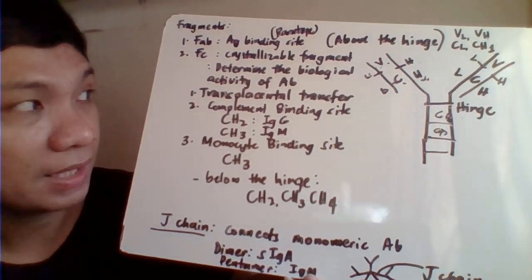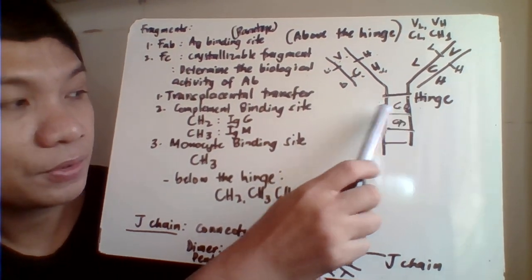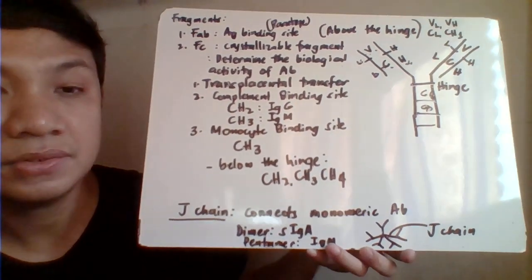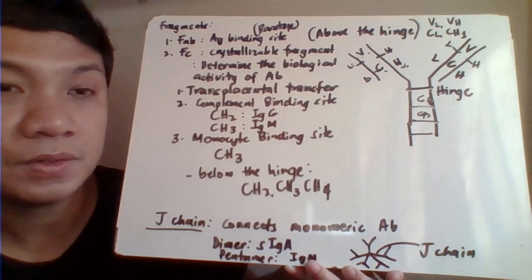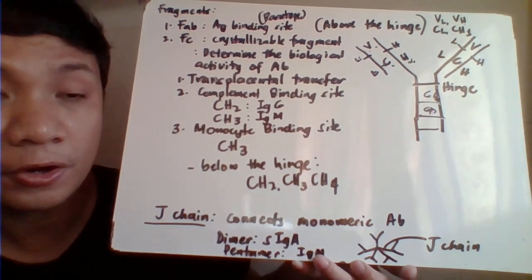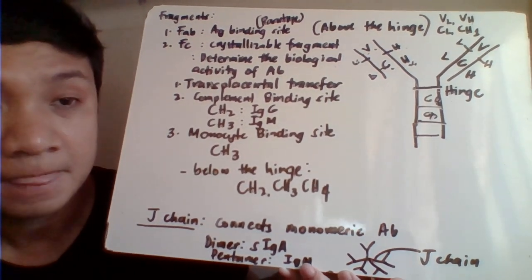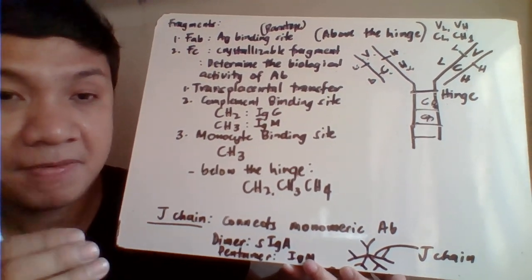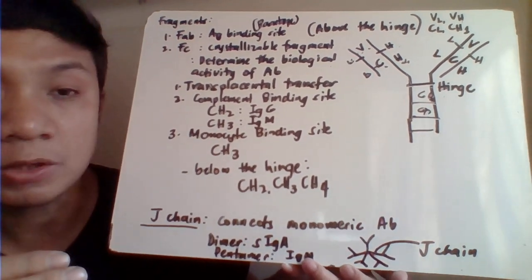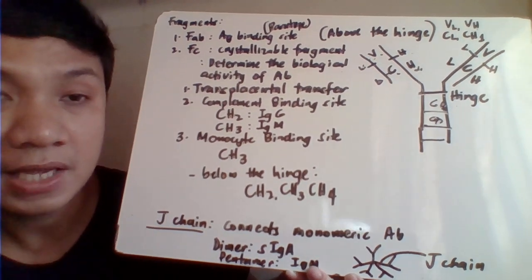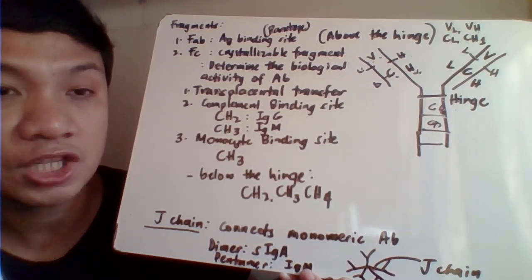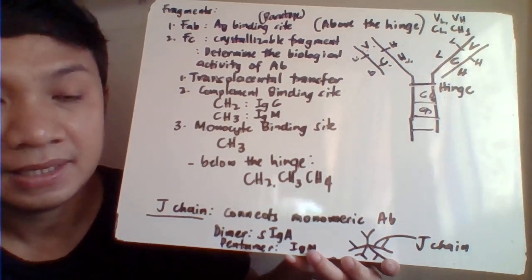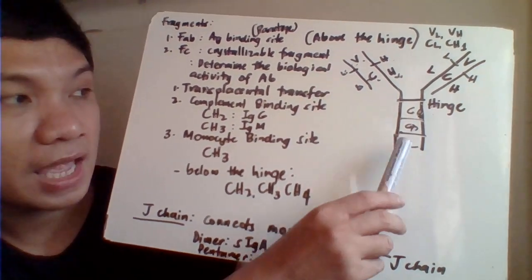The complement binds to the Fc portion of the antibody — at CH3 in the case of IgM, and at CH2 in the case of IgG. Only IgM and IgG are capable of complement fixation. Monocytes can also bind to the antibody through its CH3 portion.